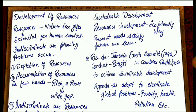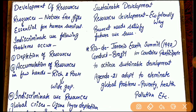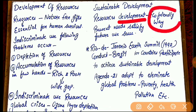For overcoming these problems, we can pursue sustainable development. What is called sustainable development? Sustainable development means the development of resources should be done without harming the environment — the development should be eco-friendly. When resources are developed in an eco-friendly way, it will satisfy the needs of the present generation, and we will also preserve them for future generations. That is called sustainable development.